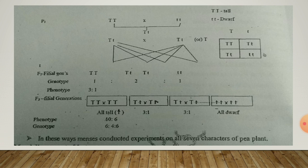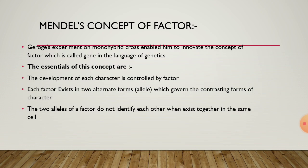Finally, he took his observations on the parent, F1, F2, and F3 generation of plants and tabulated the results. George's experiment on monohybrid cross enabled him to innovate the concept of factor, which is called gene in the language of genetics.